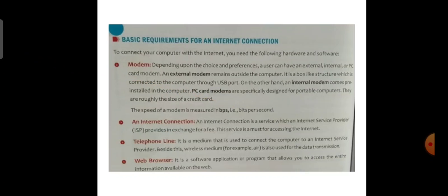An internet connection is a service which an internet service provider provides in exchange for a fee. This service is a must for accessing the internet. Telephone line is a medium used to connect the computer to an internet service provider. Besides this, wireless medium, for example air, is also used for data transmission. A web browser is a software, application or program that allows you to access the entire information available on the web.